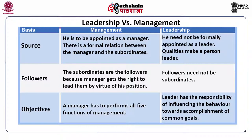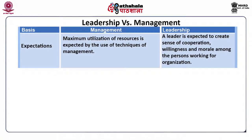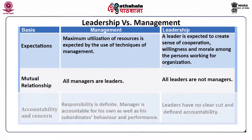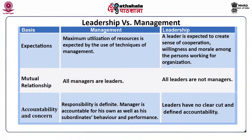Next is objectives — in management, a manager has to perform all five functions of management. But in case of leadership, the leader has the responsibility of influencing behavior towards accomplishment of common goals. Then expectations — for management, maximum utilization of resources is expected. But in case of leadership, a leader is expected to create a sense of cooperation, willingness and morale among persons working for the organization. Then mutual relationship — in management, all managers are leaders, but for leadership, all leaders are not managers. Accountability and concern — for management, responsibility is definite. For leadership, leaders have no clear-cut and defined accountability. A leader is more concerned with follower satisfaction while achieving goals.